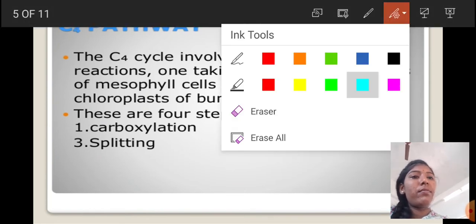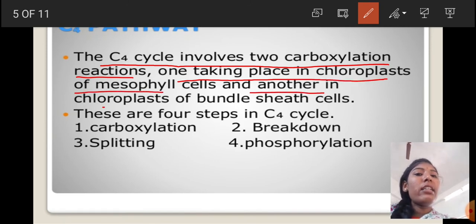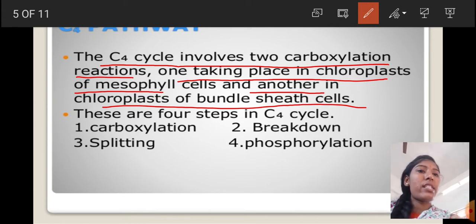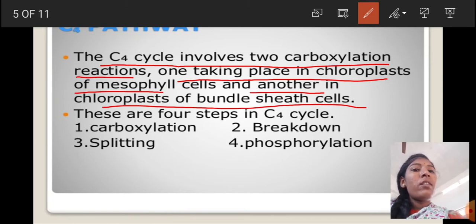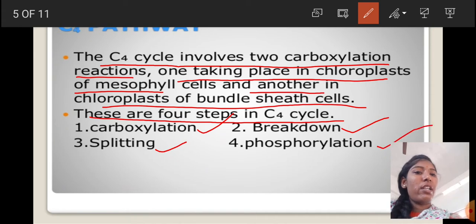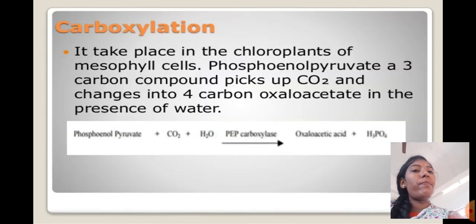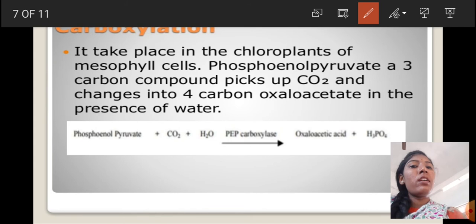Next, the C4 pathway. The C4 cycle involves two carboxylation reactions: one taking place in the chloroplasts of mesophyll cells and another in the chloroplasts of bundle sheath cells. These are the four steps in the C4 cycle: carboxylation, breakdown, splitting, and phosphorylation. The first step is carboxylation, which takes place in the chloroplast of the mesophyll cell.